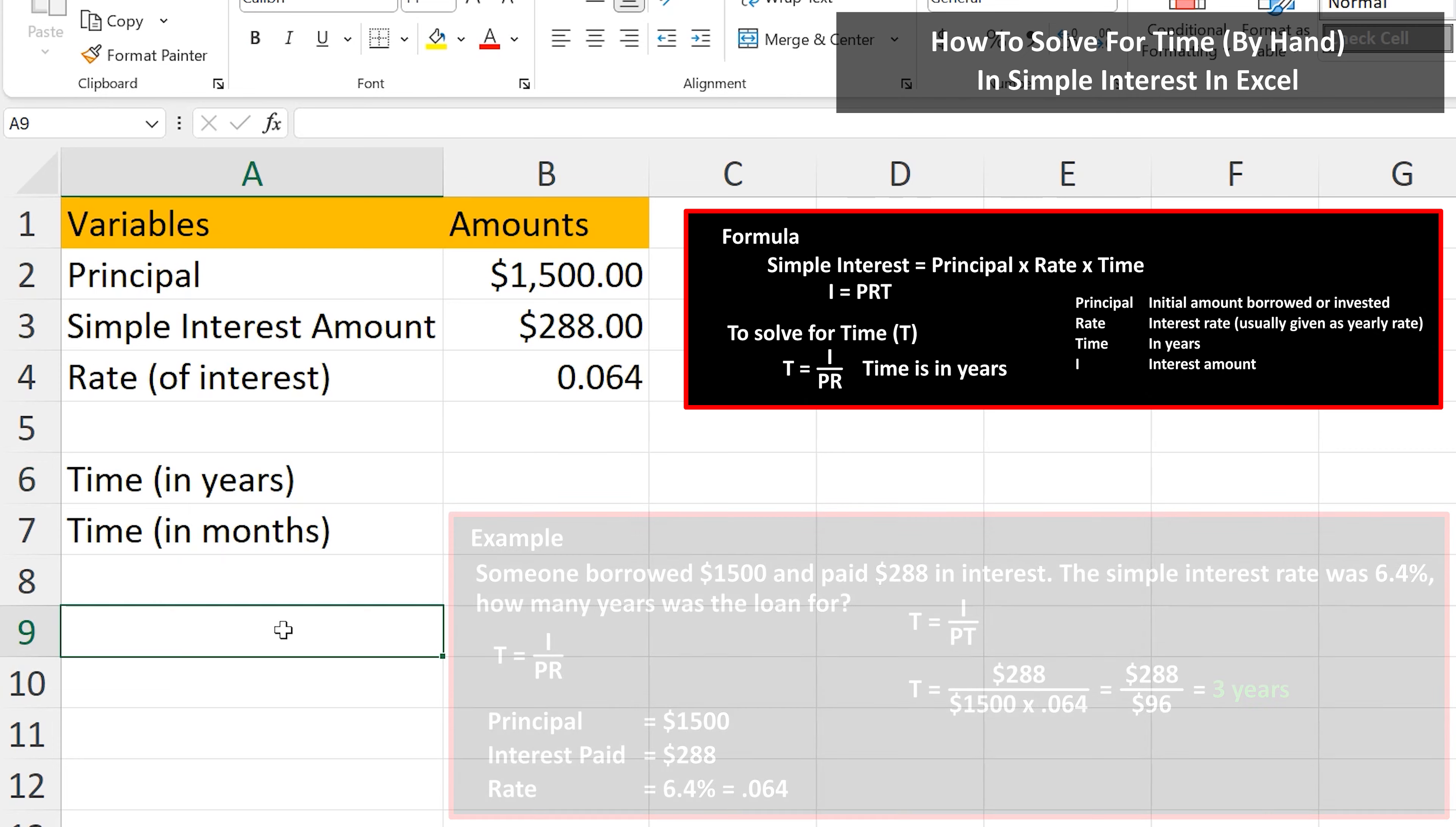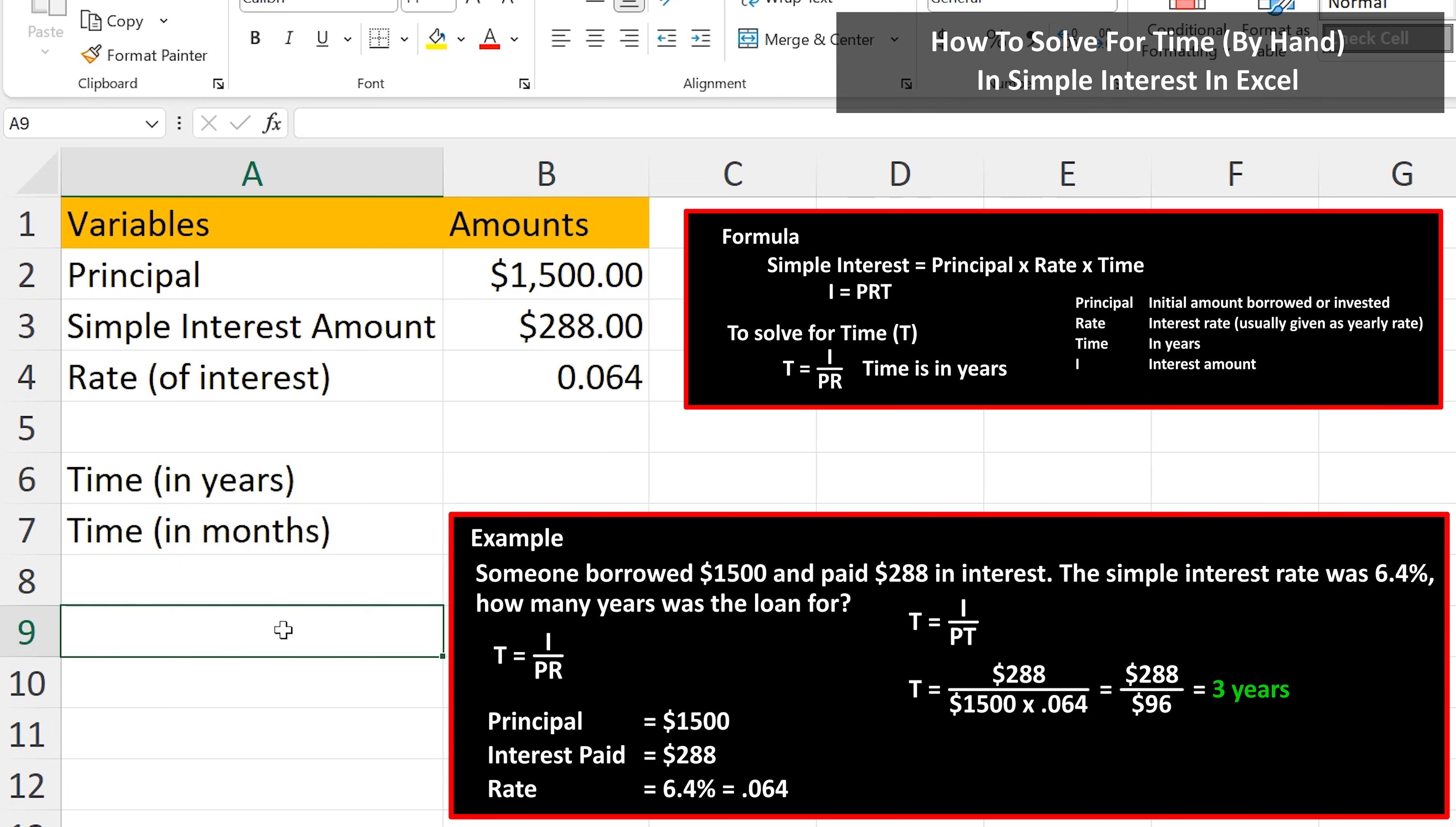As an example, let's say that someone borrowed $1,500 and paid $288 in interest. The simple interest rate was 6.4%. How many years was the loan for?